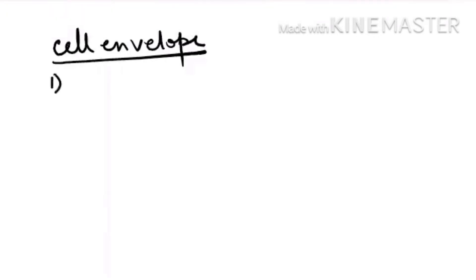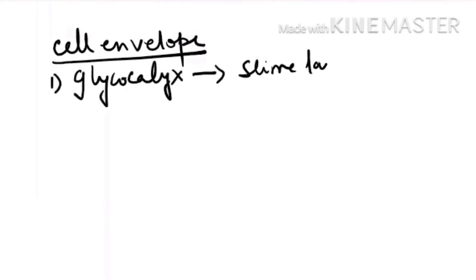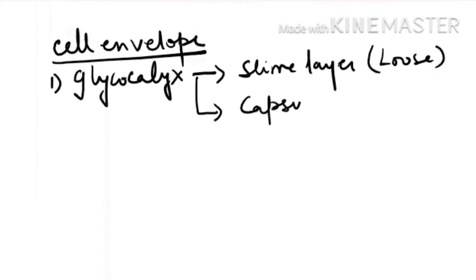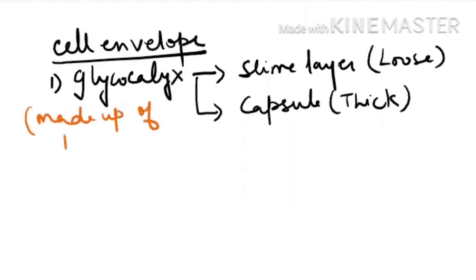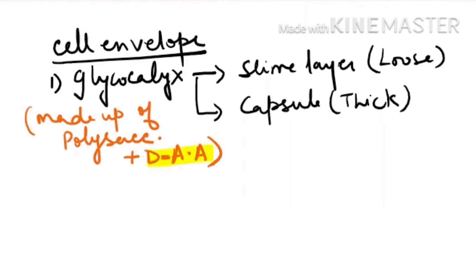Now let us study the components of the bacterial cell envelope one by one. The first component on the outside is glycocalyx. If glycocalyx is loose it is known as a slime layer, but if it is thick it is called a capsule. Glycocalyx is made up of polysaccharide plus D-amino acid, and bacteria is pathogenic because of the D-amino acid.